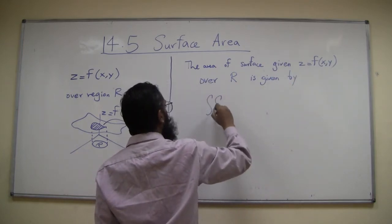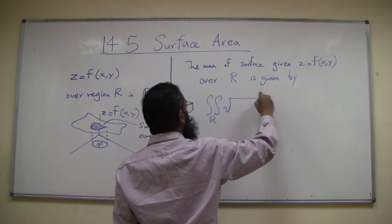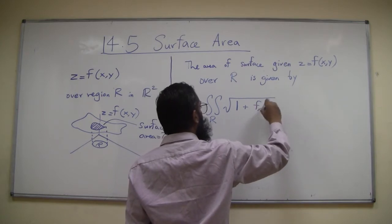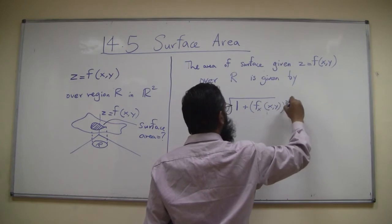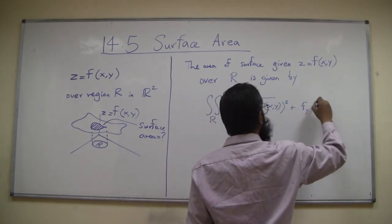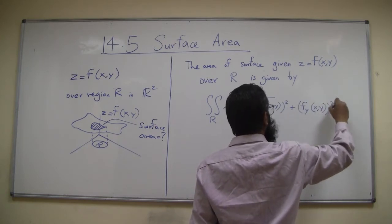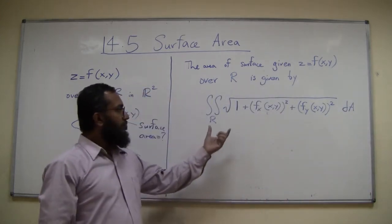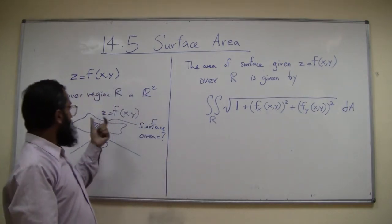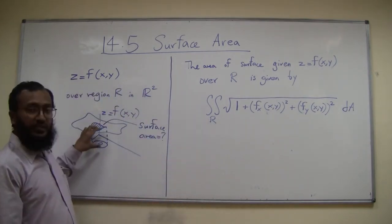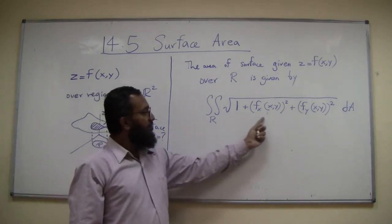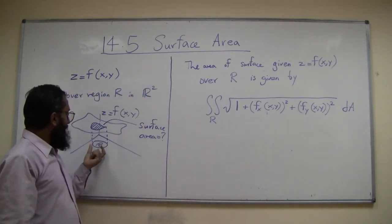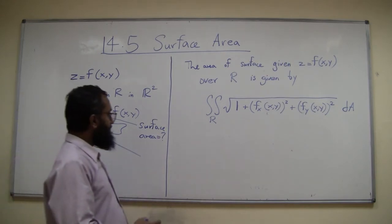The integral over R of square root of 1 plus f_x(x,y)² plus f_y(x,y)², all of this under the square root, dA. Over R, then we end up getting this surface area. Okay, let's do an example.